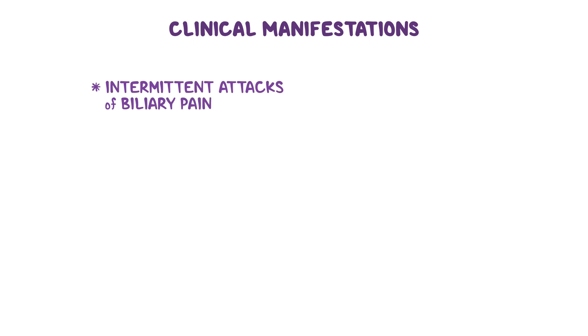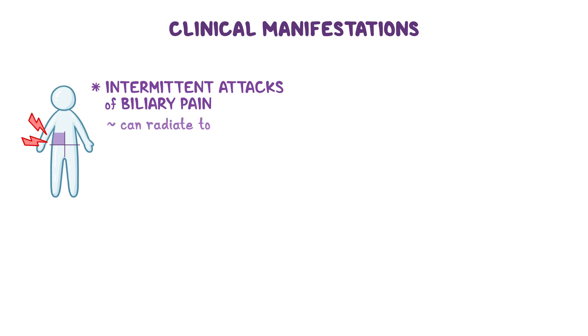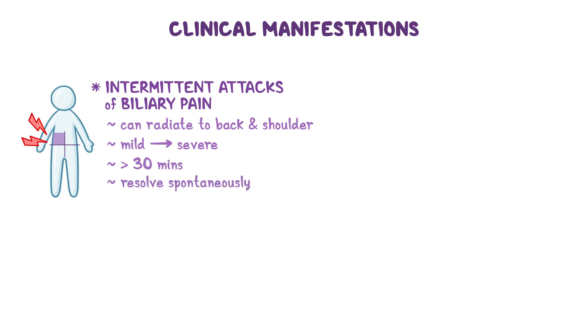The classic manifestation of SOD includes intermittent attacks of biliary pain, which is a type of colicky abdominal pain that is typically located in the upper right quadrant and can radiate to the back and shoulder. The pain can be mild to severe, lasts greater than 30 minutes, and can resolve spontaneously.